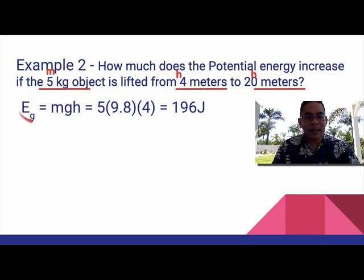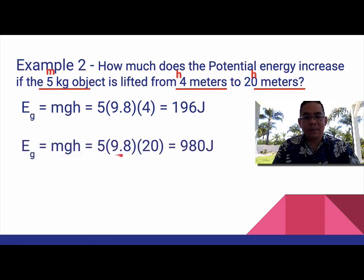So we want to look at that first calculation. It's MGH. The 5 goes in there. The 9.8 goes there. And of course the 4 goes right there. We do the same with the 20. And we get 5 times 9.8 times 20, which is 980.